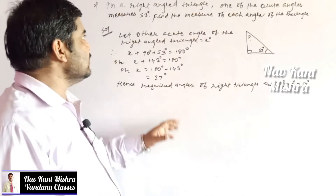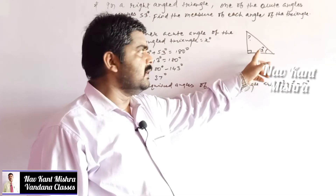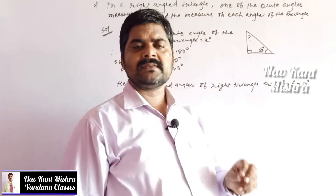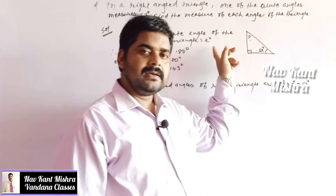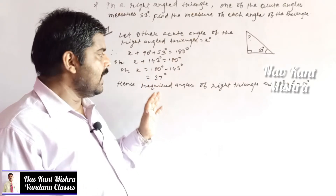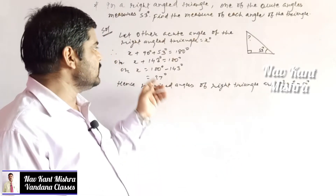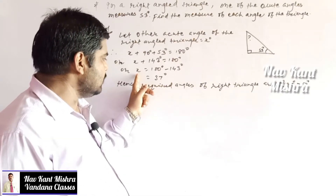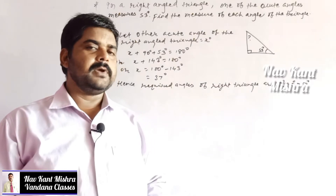In this question, a right-angle triangle is given with one acute angle of 53°. You need to calculate all angles. The third angle is considered as x. By the angle sum property: x + 90° + 53° = 180°. On simplification, x = 37°. So all angles are 37°, 90°, and 53°.